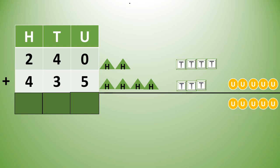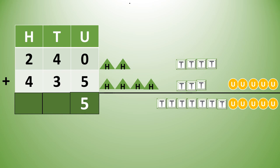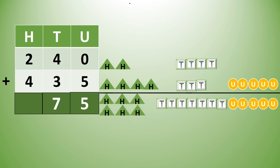We draw 5 units and we write 5. 4 tens plus 3 tens give us 7 tens — we draw 7 tens and we write 7. 2 hundreds plus 4 hundreds will give us 6 hundreds — we draw 6 hundreds and we write 6. So 240 plus 435 is equal to 675.